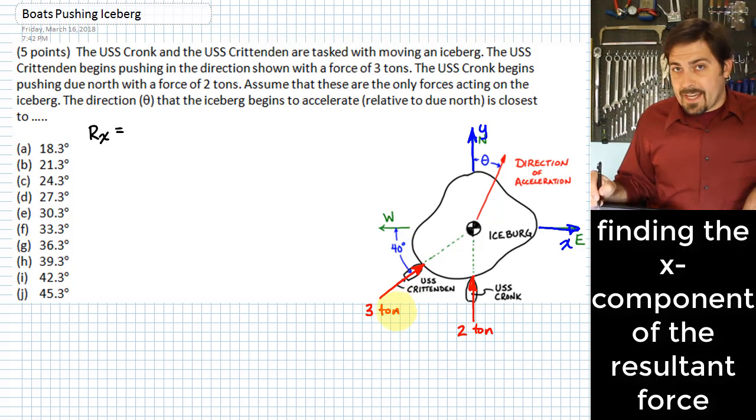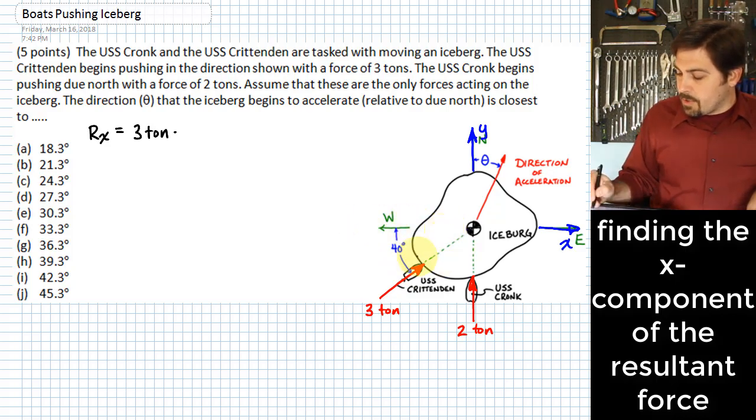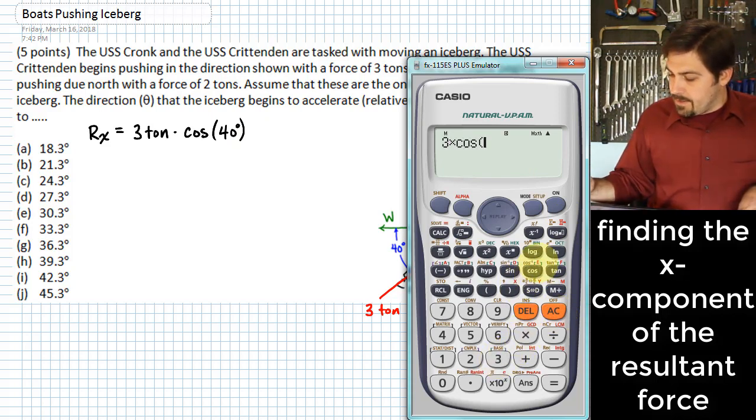To figure out that x component from the USS Crittenden, we would have three tons times—this 40 degrees is measured relative to a horizontal axis. The component we're trying to get is the one that's adjacent relative to that angle, and so I need to use a cosine function there. So cosine of 40 degrees.